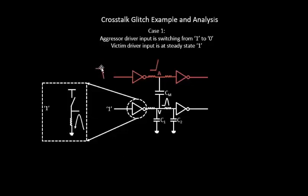When the input moves from logic 1 to logic 0, you see the output moving from logic 0 to logic 1, and because of this you see a glitch. The reasons are quite obvious: we have a leaky bucket over here, and when you open this particular tap, it has got up along with the other capacitances that this particular inverter is charging at point A.